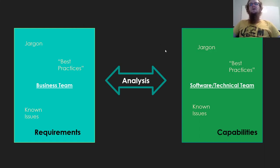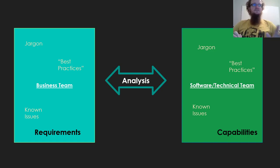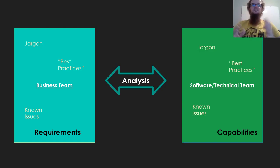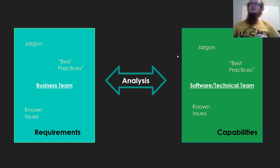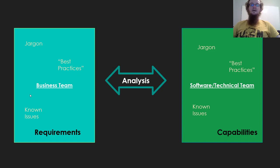If you take all the jargon, best practices, and known issues on the business team side, that's really the requirements — what the system should do. That's also the scope of the project. On the technical side, what you have is the capabilities of the software team. If a requirement calls for satellite telemetry and you don't have someone with GIS experience, then you have a requirement without a covering capability. Those are risks you want to analyze and identify very early.